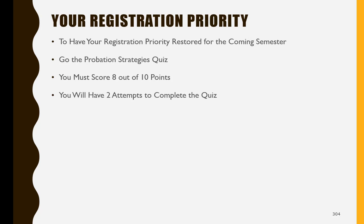Now that you have completed the workshop, you must complete the probation strategies quiz in order to have your registration priority restored for the coming semester. You must score 8 out of 10 points and you have two attempts to complete the quiz.